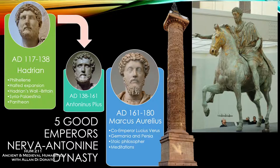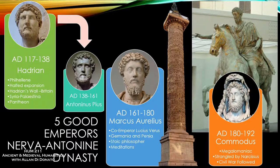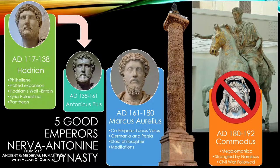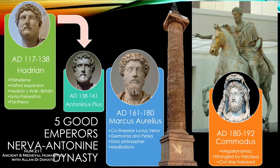He allows his son to succeed him — Commodus, reigning from 180 to 192. He's not one of the good emperors. He was a megalomaniac: in one statue you can tell he looks a lot like his father, but notice what he's wearing — a club slung over his shoulder and a lion head worn as a helmet. If you know your Greek mythology, you know he's presenting himself as the great hero Heracles, or for the Romans, Hercules. He sees himself as this great heroic warrior figure.